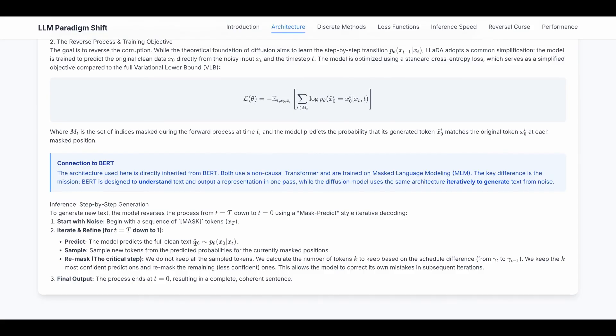First we do prediction. The model should predict the full clean text x0 from the distribution p_theta(x0|xt). Now with the full clean text, the next step is sample and remask. We sample new tokens from the predicted probabilities but we don't keep all of them.